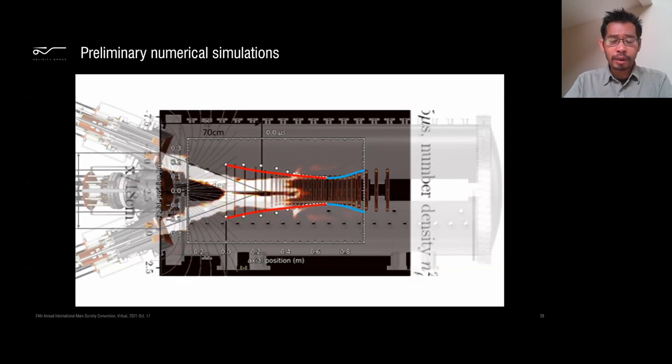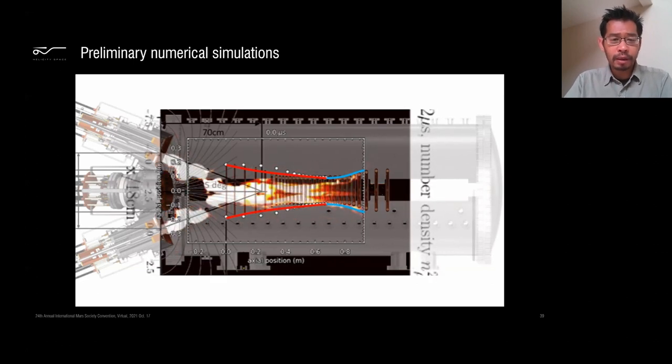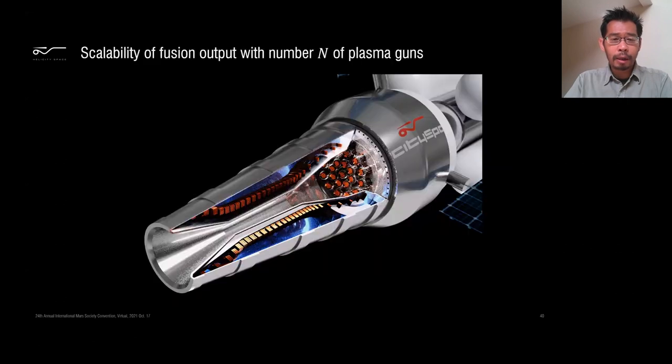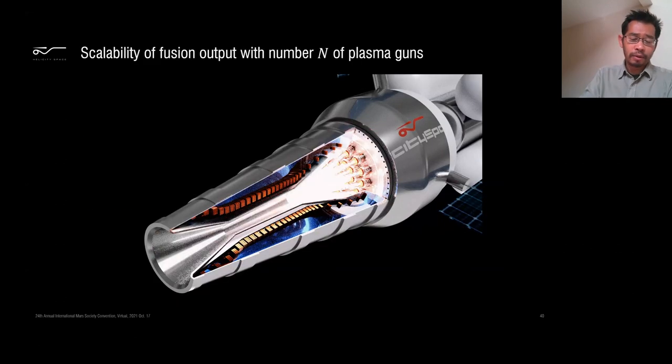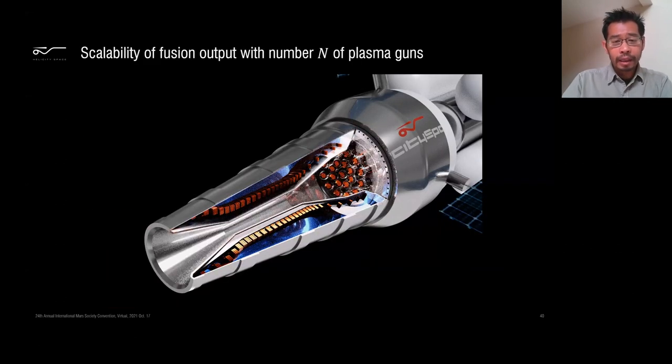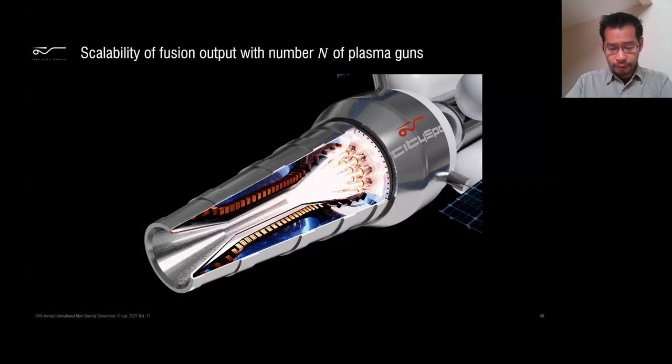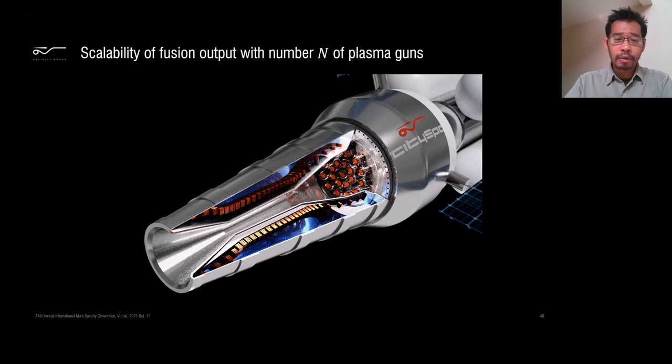We've done preliminary numerical simulations. These are very preliminary pictures with Los Alamos to help us inform the design and the timing of our subsystem. And the key idea really is, and that's different from prior fusion concepts, is that the fusion output scales with the number of plasma sources. You can see the plasma sources.